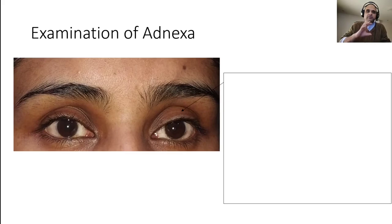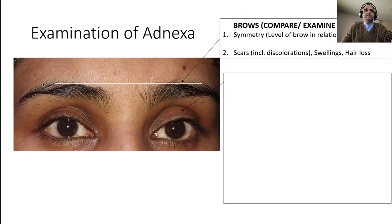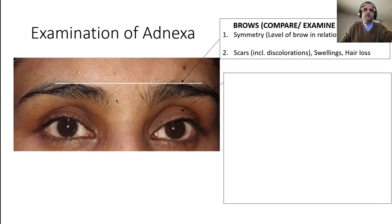First we'll cover examination of the adnexa, followed by a clinical skill demonstration. When examining the adnexa you do so with the eyes open and eyes closed. With eyes open, the first thing to check is whether the brows are at the same level. You compare the topmost point of both brows and draw an imaginary line between them to see if they are at the same level. Brow asymmetry may indicate use of the frontalis muscle to open the eyes, or a problem with the levator muscle.